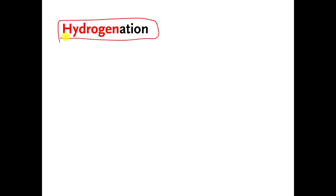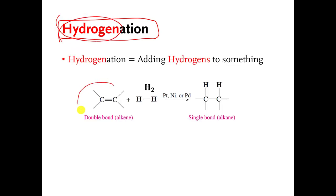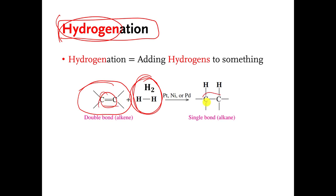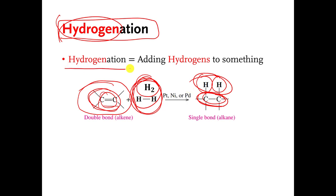A hydrogenation reaction means that you bust that carbon-carbon double bond and you add hydrogens — that's what hydrogenation means. Here is my pretend molecule with a double bond. All you need to know is this double bond turns into a single bond, and these H's get stuck onto those carbons. They didn't used to be there, but they are there now — they're stuck on. This is an example of a hydrogenation reaction.